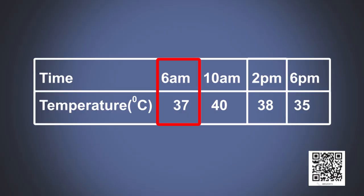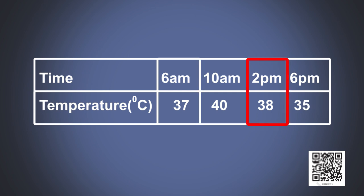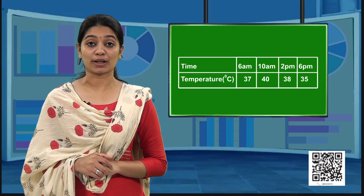Now let me tell you an incident. Last week my friend Renu was sick. So I took her to the hospital. But the doctor told me that she has a mild fever and you need to check her body temperature every four hours. So I recorded her body temperature every four hours and it was as follows: At 6 am it was 37 degrees, at 10 am it was 40 degrees, at 2 pm it was 38 degrees, and at 6 pm it was 35 degrees.